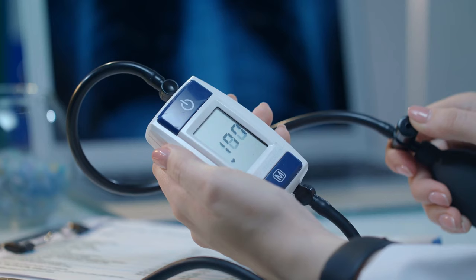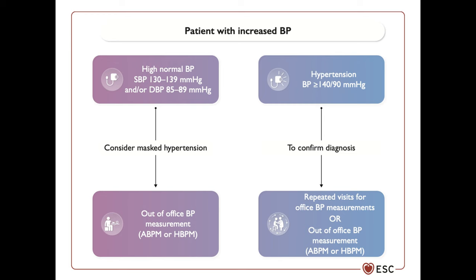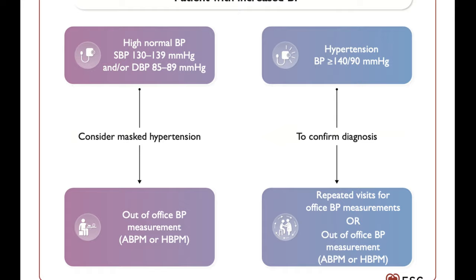Hypertension is present in 70–80% of patients with diabetes, so screening is recommended in all diabetic patients. Even in patients with a blood pressure between 130 and 139 at the office, masked hypertension must be excluded by ambulatory or home blood pressure measurement.